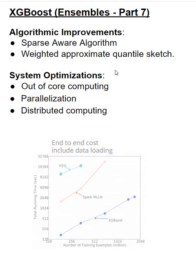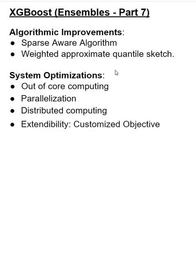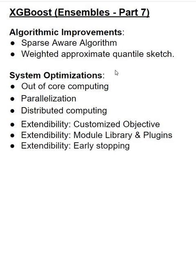The next module for system optimization is Extendability. One of the nice things with XGBoost is it allows customized objective functions, separate modules, and is in fact built as a modular package. It has a concept of plugins that one can write to extend the functionality. The community is very large, and people have contributed by submitting an early stopping algorithm, which has now become part of XGBoost since it significantly improves its ability to process datasets.